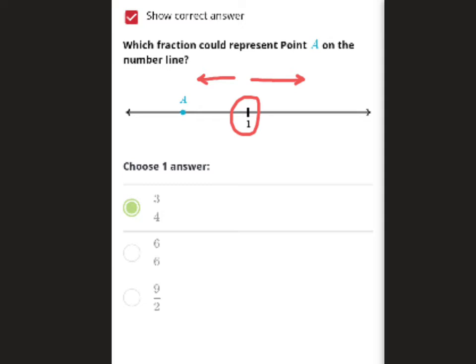So let us look at the options that they've given us. The first one is 3 over 4, and if we write that as a decimal, it would be 0.75.